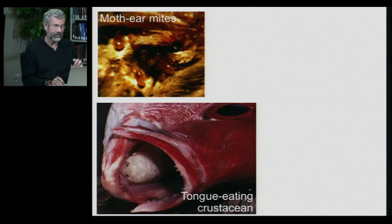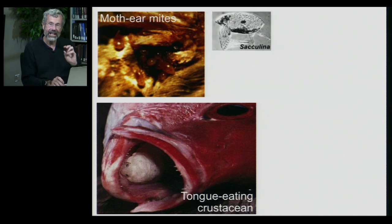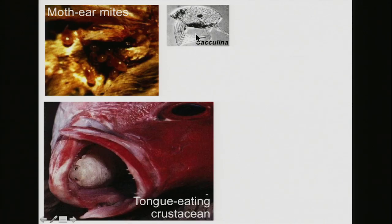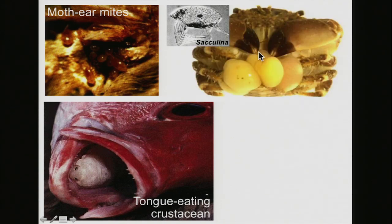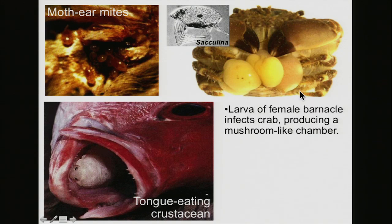Now, sacculina — an innocent-looking little barnacle in its larval phase — infects crabs. A female sacculina infects the crab and then instructs the crab to grow a mushroom-like chamber, essentially a tumor produced by the crab under the parasite's direction.